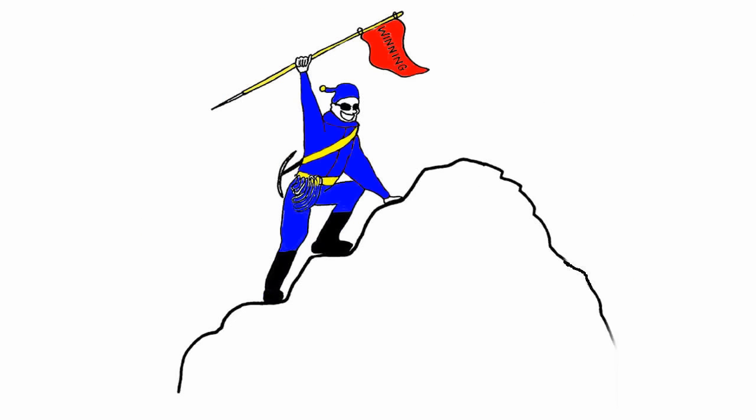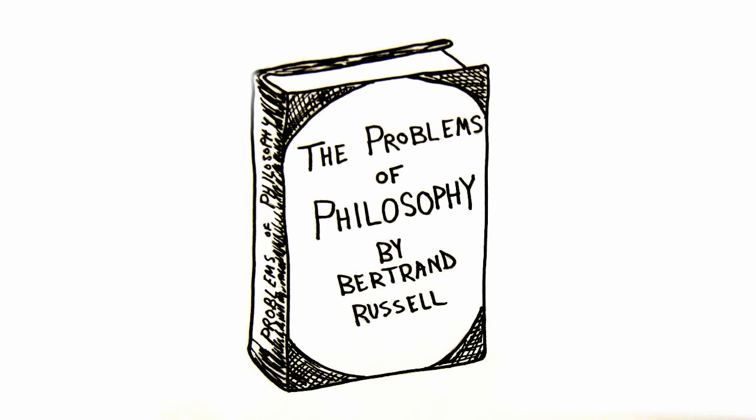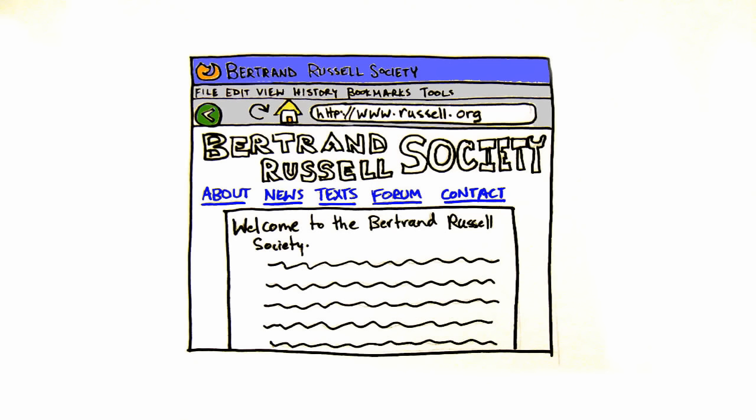If you want to succeed at your assignments or research, you should only use quality information, whether it's found in books, journal articles, or websites. Use the following criteria, also known as the CRAAP test, to critically evaluate any source of information.